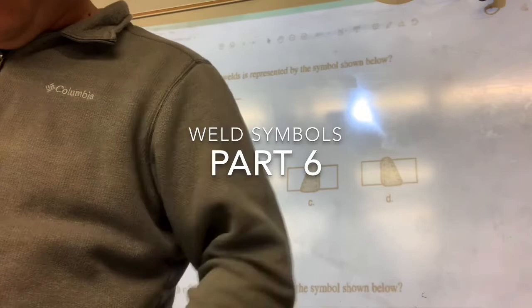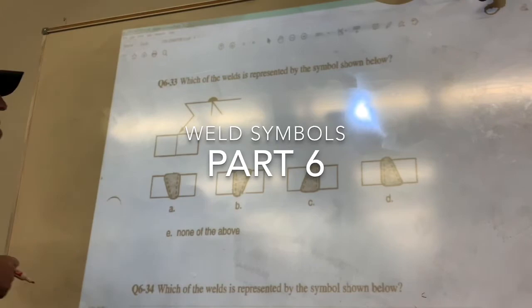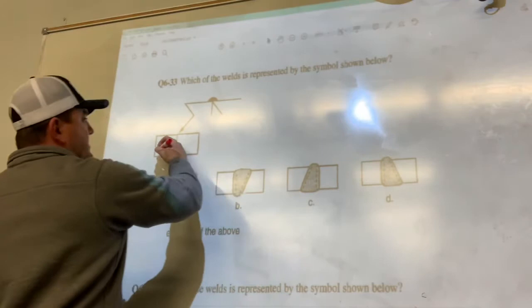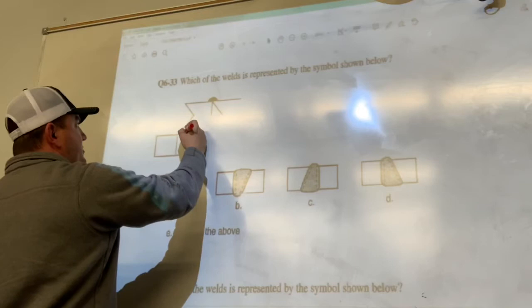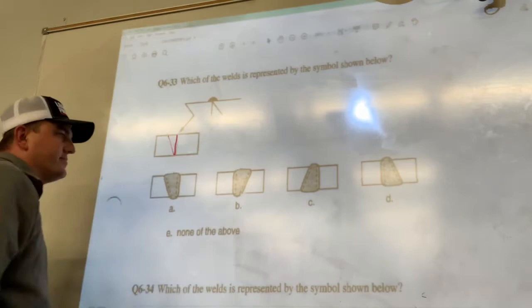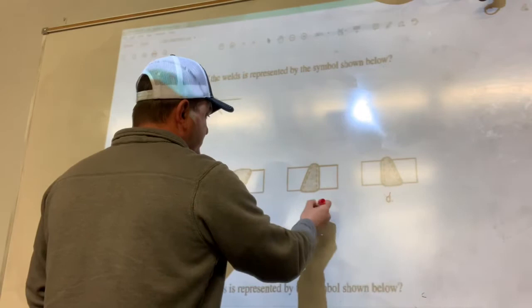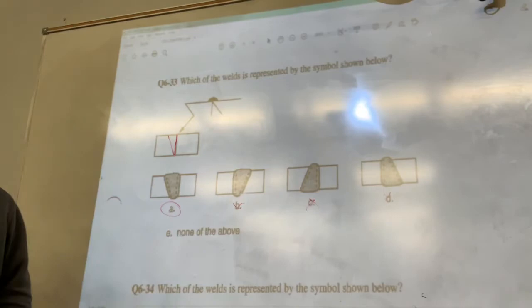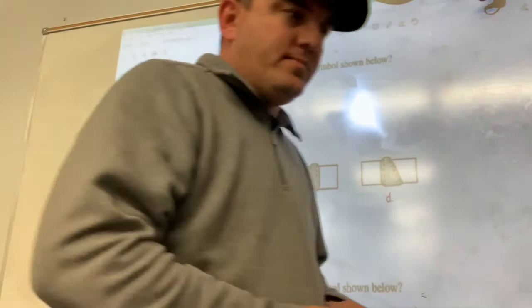Alright, let's go to 33. So let's go this route. Got our weld symbol here. We have the arrow side, so it's going to be done from the top. Our arrow is pointing over here, so our joint is going to look like that. Alright, let's go to 34.